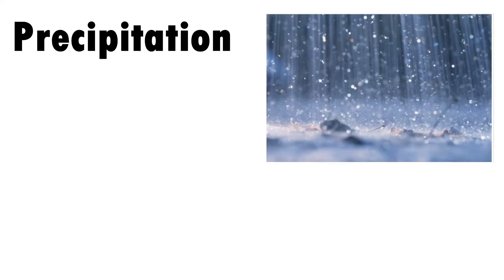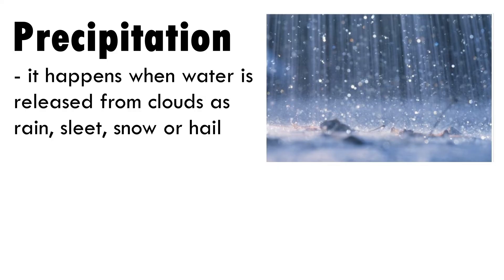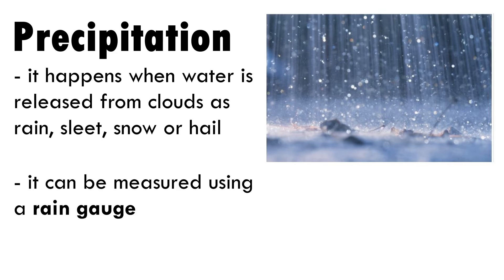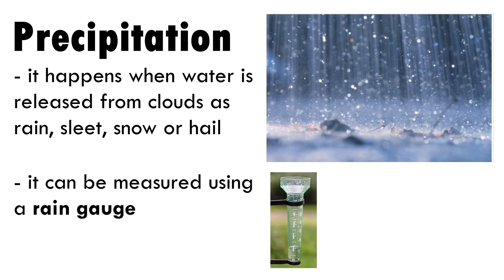Relative humidity refers to the amount of water vapor in the air at a given temperature. Precipitation happens when water releases from clouds as rain, sleet, snow, or hail. It can be measured using a rain gauge.